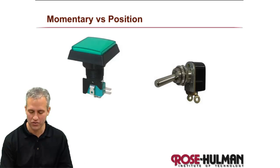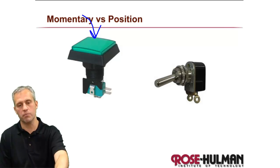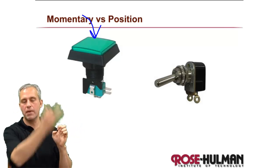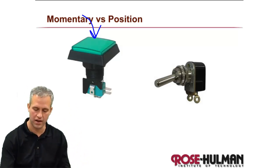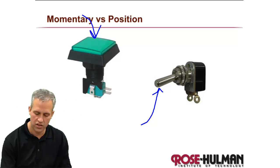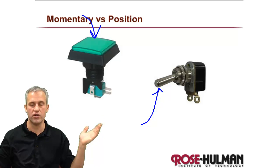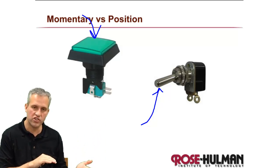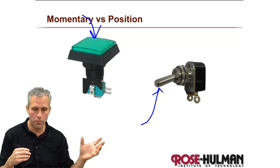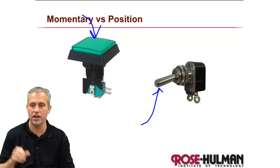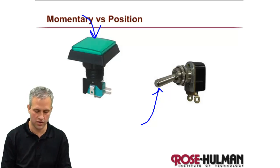In addition to normally open and normally closed, there's also the concept of momentary versus position. Momentary is like a spring-loaded push button — you push it and when you let off it bounces back. A position switch, if you flip it up and leave it alone, stays where you put it. So you have four possibilities: normally open momentary, normally closed momentary, normally open position, or normally closed position. You have to know which one you're dealing with.